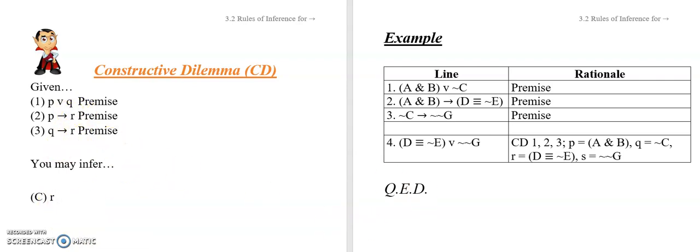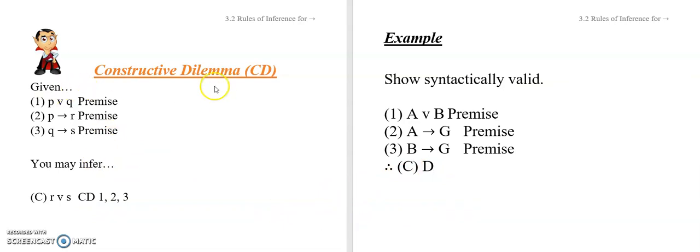We're imagining a situation where R and S are the same. Take a look at this particular case right here. See if you can show that this argument is syntactically valid. So can you move from these three strings to this string? Excuse me, this should be G all by itself like this. See if you can figure out how to do that. You might have to use constructive dilemma along the way. Pause now.